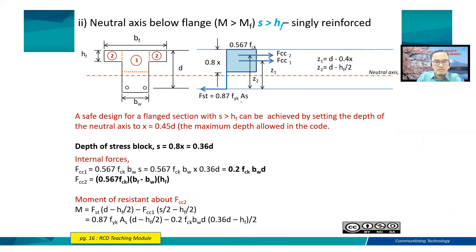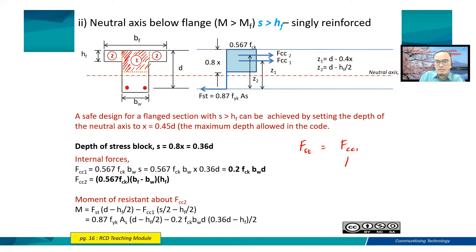Here are the derivations of the equations, similar to what we learned for rectangular sections. The compression area is considered, and the contribution of the steel bar is for tension. We derive the forces experienced by the concrete due to compression, including the contribution from region number two — the left and right sides of the beam originally from the slab.